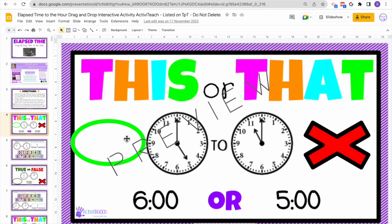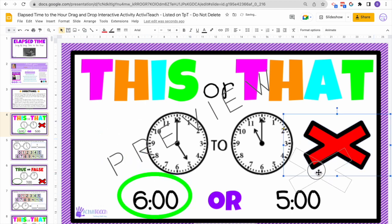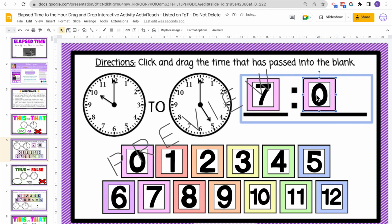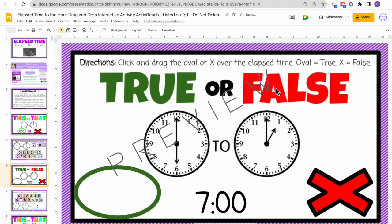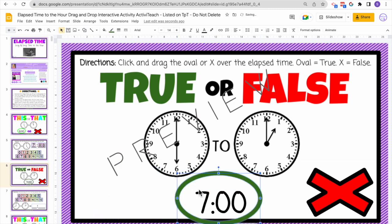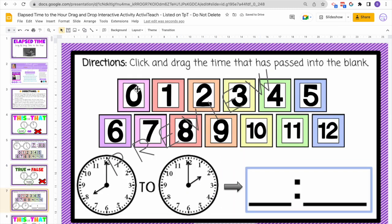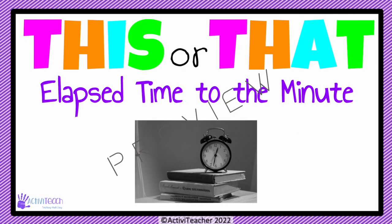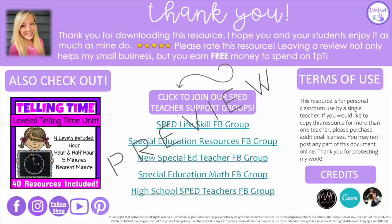This might be my favorite — an elapsed time drag and drop activity. Students will drag and drop the green oval to the correct answer and the X over the incorrect answer. On the next slide, students will drag and drop the elapsed time up top. Then there's a true or false activity — this elapsed time happens to be seven hours, so it is correct — and one more drag and drop the answers activity.